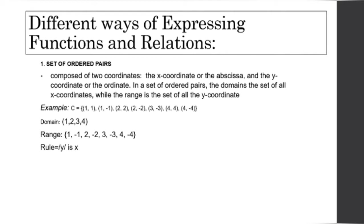Example: (1,1), (1,-1), (2,2), (2,-2), (3,-3), (4,4), and (4,-4). In this example, we could tell that this is a relation since the x is repeated. The domain is {1, 2, 3, 4}, while the range is {1, -1, 2, -2, 3, -3, 4, -4}. Always remember that the domain is x and the range is y. That's how we get the domain and range. Lastly is the rule. The rule in this example is y in absolute value is x.